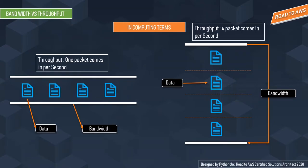Shifting to computing terms: if there is a data pipeline and only one data packet can be processed at once, versus a pipeline with greater width where four data packets can be processed at once, we can see the difference. That's how bandwidth and throughput differ. Bandwidth is the maximum amount of data that can travel through a channel, and throughput tells you how much data was transferred from a source at any given time.